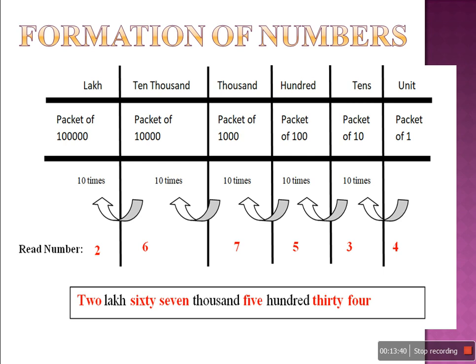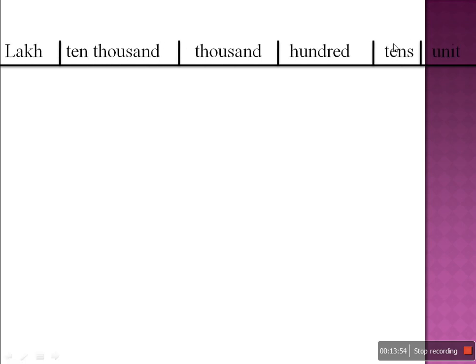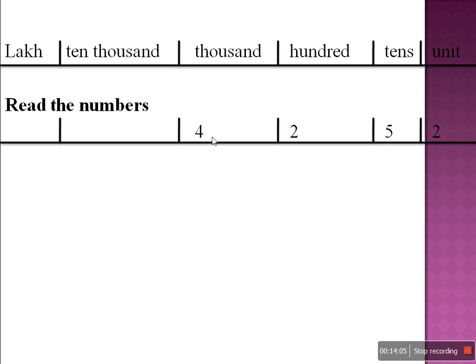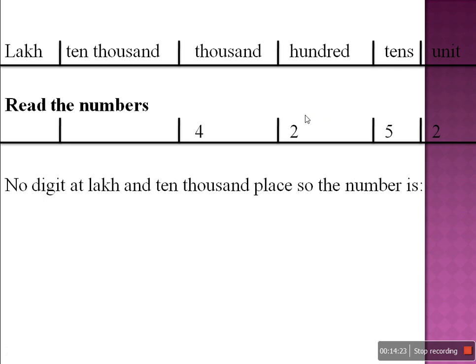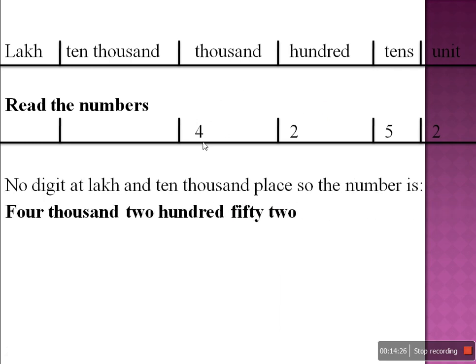Depending upon this place value chart, we can read other numbers. We have units, 10s, 100, 1000, 10,000, and lakhs. Now read the following numbers. Look at this — nothing is on the lakh place, nothing on the 10,000th place. At the 1000th place is 4, 100th place is 2, 10th place is 5, and unit place is 2. So the number will be 4,252.